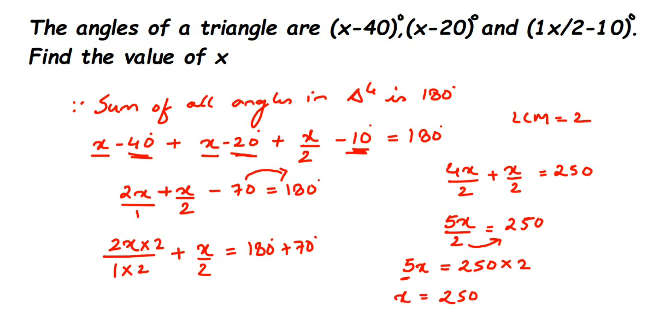So x = (250 × 2) / 5. Cancel 5 and 250: 5 into 250 is 50. Now 50 times 2 is 100. The x value we got is 100.